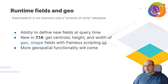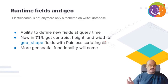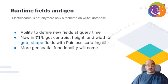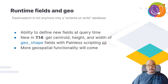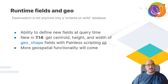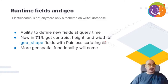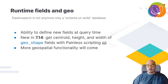The other big new feature is runtime fields. Until now, Elasticsearch was a schema-on-write database — you had to define mappings when creating indices. Now you can derive and generate new computations at query time when retrieving data, similar to a relational database. In the geo world, this means you can now compute centroid, height, and width from geoshape fields at query time, with more geoshape analysis functions expected in the near future.